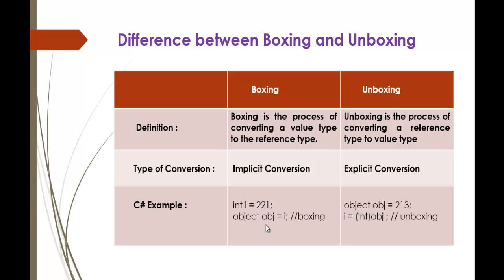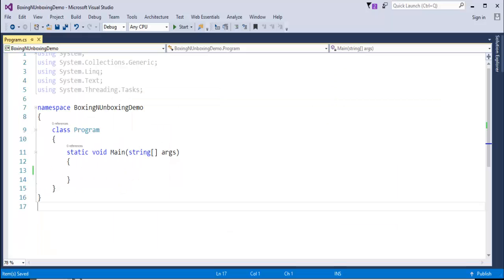Here is an example: int i is equal to 21, and we are converting this value type to the object type, which is a reference type. Converting the reference type — that is, object type — back to integer type is Unboxing. Let us see a quick demo of it.